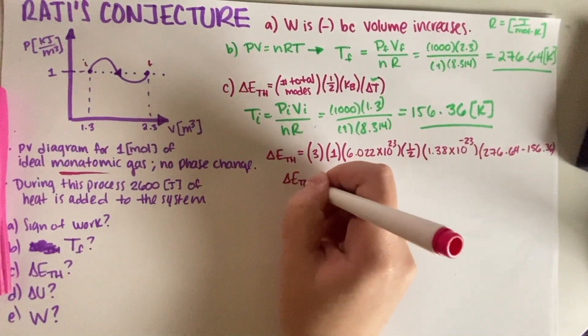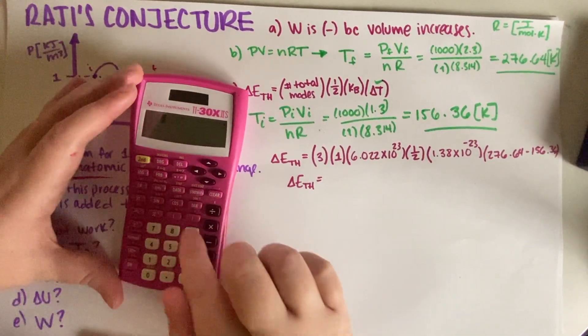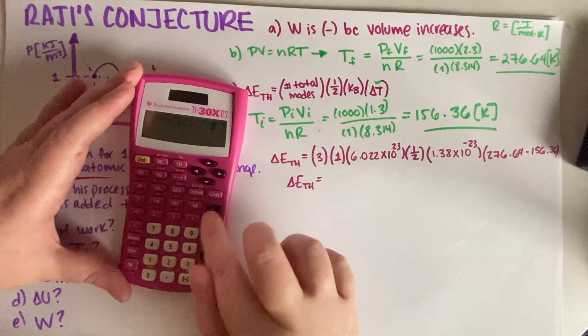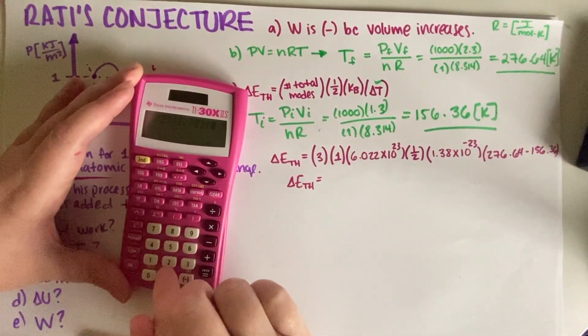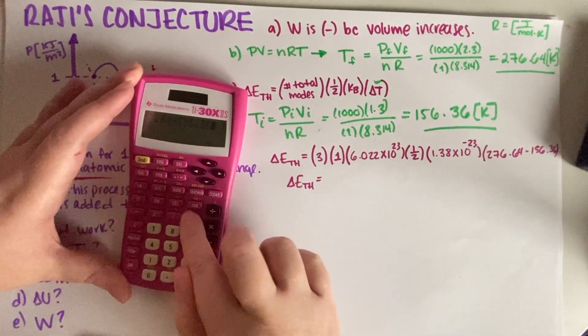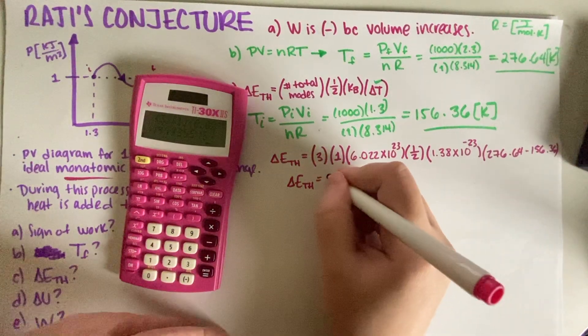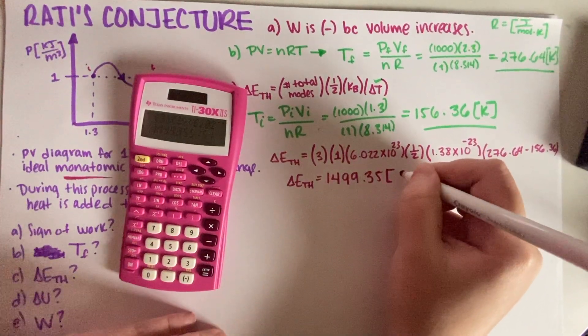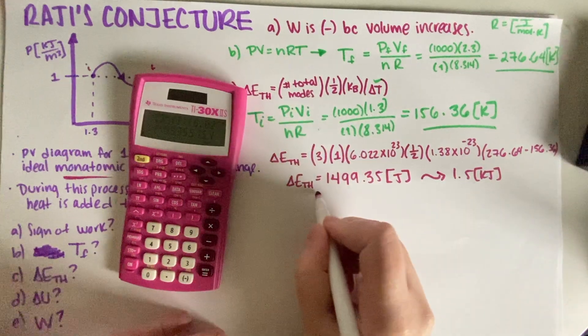So, change in thermal. If we multiply all of this, that would be, let's see, 3, 1, 6.022, 1.5, 1.38, and then 276.64, minus 156.36, 1499.35 joules, so approximately 1.5 kilojoules, final answer.